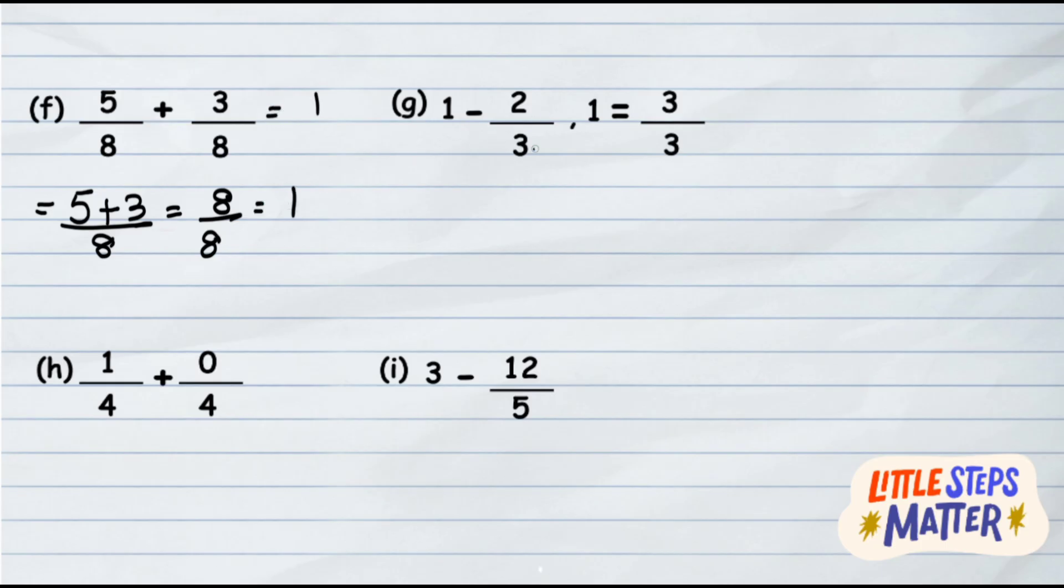1 minus 2 upon 3 where 1 is equal to 3 upon 3. That means you have to take 1 as 3 upon 3. So it will be 3 upon 3 minus 2 upon 3. Denominators are same, so subtract the numerators. The answer will be 1 upon 3.